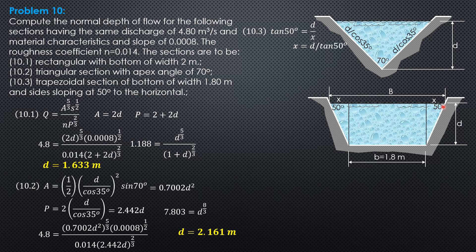This slanted sides again are each D over sin of 50. The top width therefore is 1.8 plus 2x, so 2D tangent of 50. This is D sine of 50.